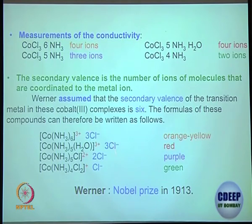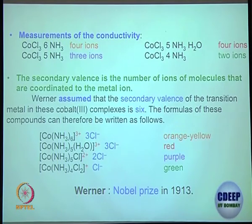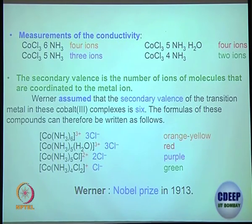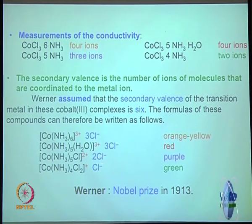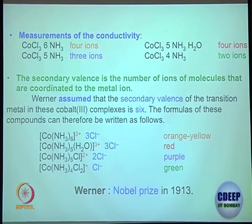If you now look back, everything falls into place: all those conductivity studies and silver nitrate experiments. Three chlorides can be precipitated, two can be precipitated, one can be precipitated — because those not directly bound with the metal center are accessible. On the other hand, in terms of conductivity: two ions means one cation and one anion; another gives three ions — two anions and one cation. All of these simple experiments can now be explained by this theory. That guy certainly deserved the Nobel Prize.